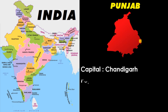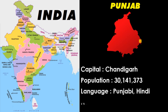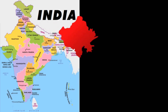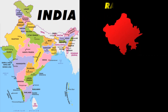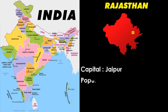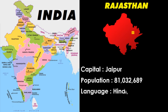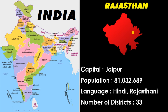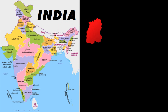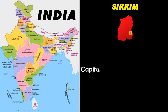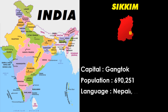Punjab: capital Chandigarh, language Punjabi and Hindi. Rajasthan: capital Jaipur, language Hindi and Rajasthani. Sikkim: capital Gangtok, language Nepali and Hindi.